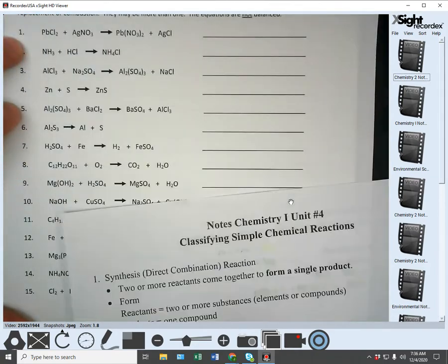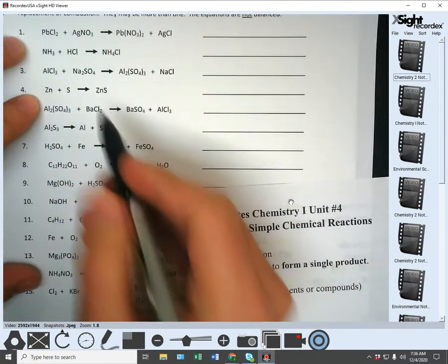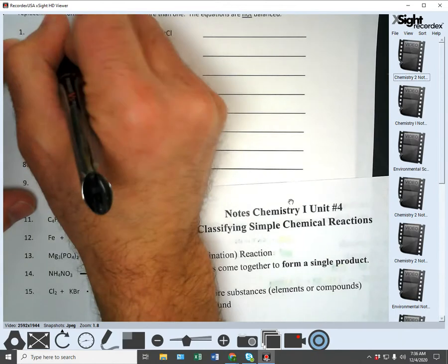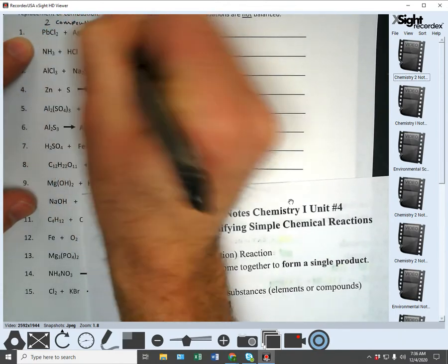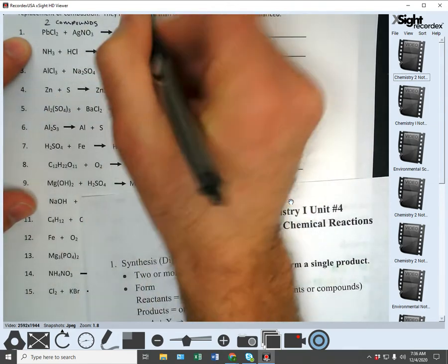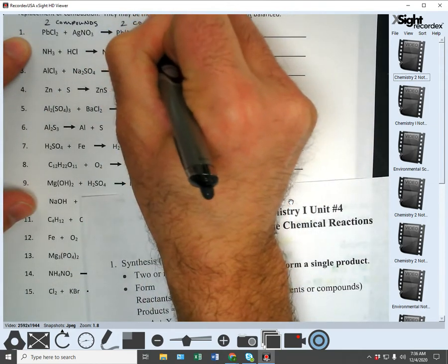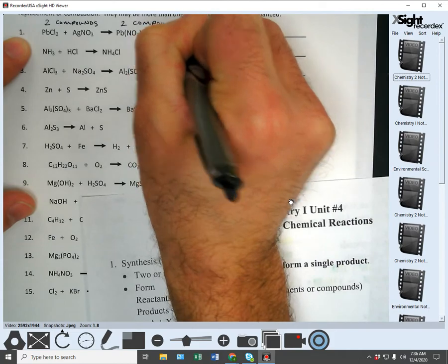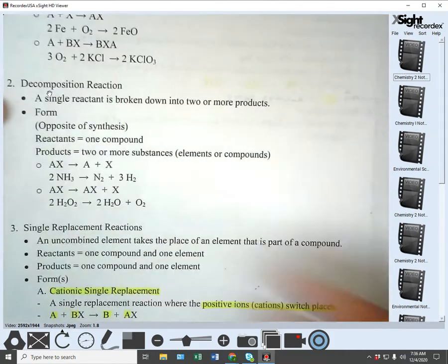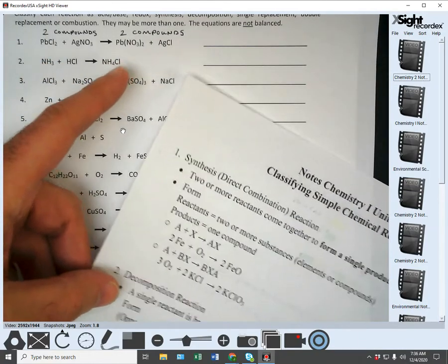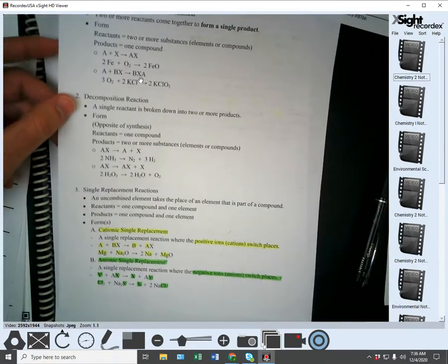So here on our reactant side, we have two compounds, right? On our product side, we have two compounds. So which type of reaction has two compounds on the reactants and two compounds on the product?